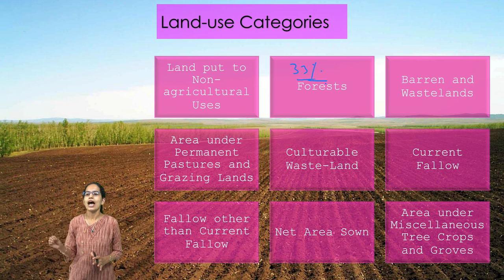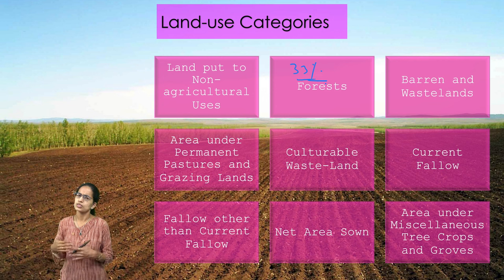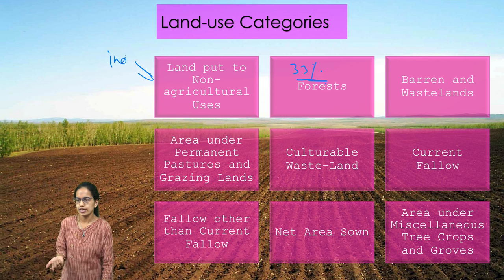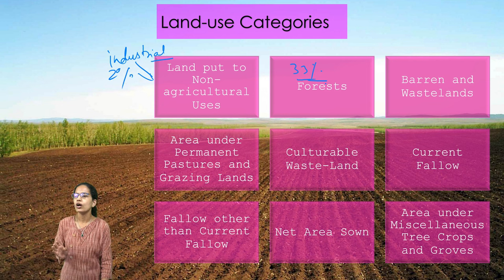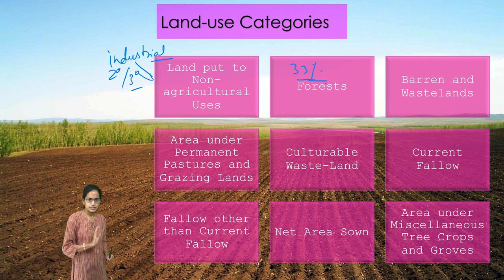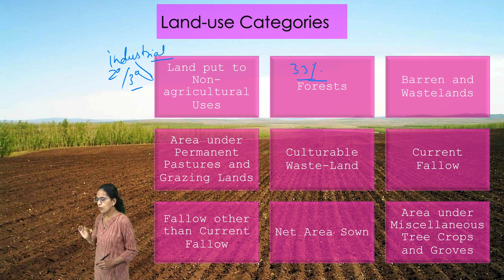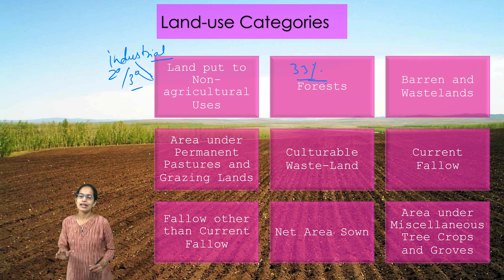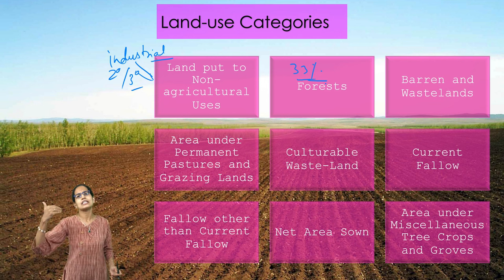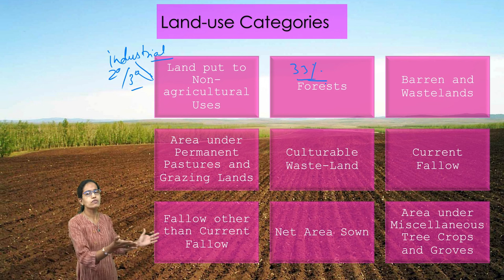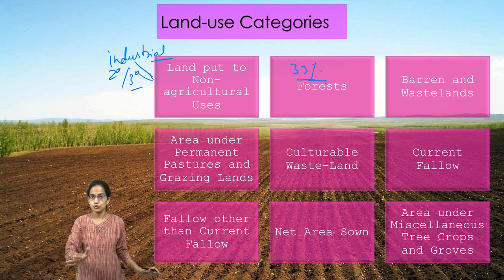The next category is land put to non-agricultural use — land involved with industries, services, or any kind of secondary or tertiary sector activity. The next is barren or wasteland: land which has been kept empty or was previously involved with agriculture and is no longer fertile or useful.